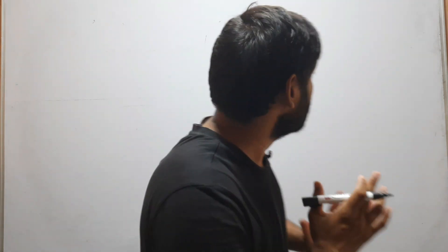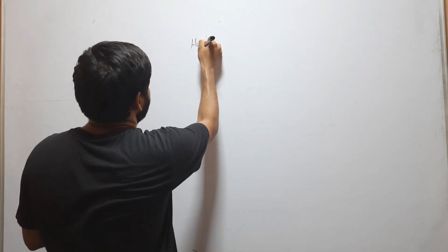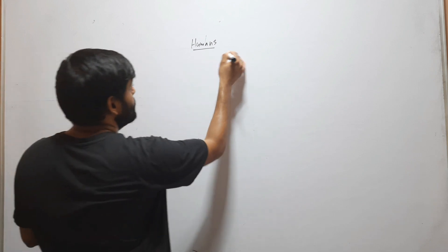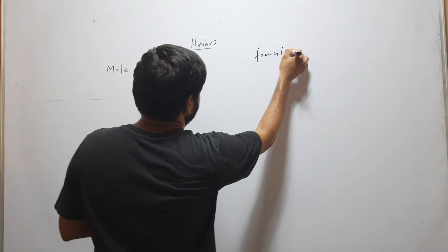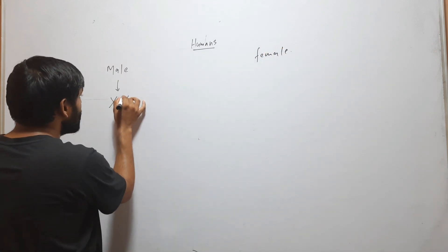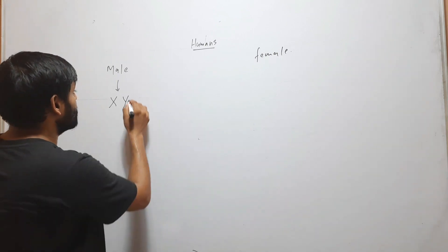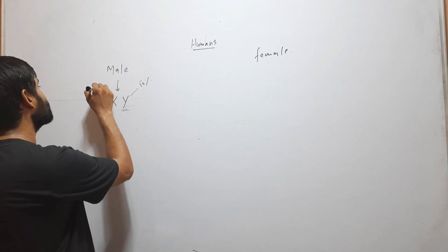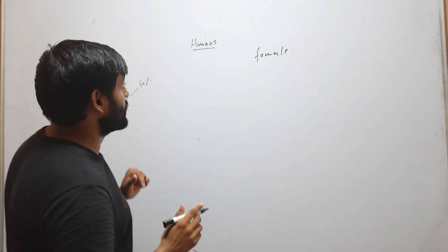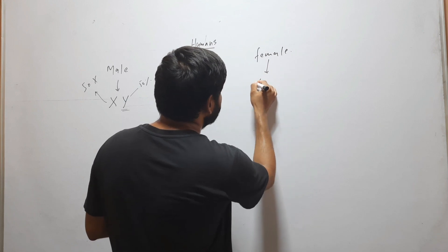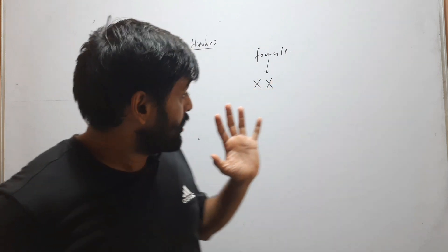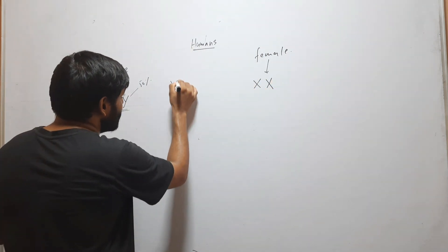The ratio should be 1, but actually it is not. In humans there are two sexes — male and female. Male is heterogametic, meaning it produces two types of gamete: 50% Y gamete and 50% X gamete. Female is homogametic — all gametes produced by the female carry the X chromosome.